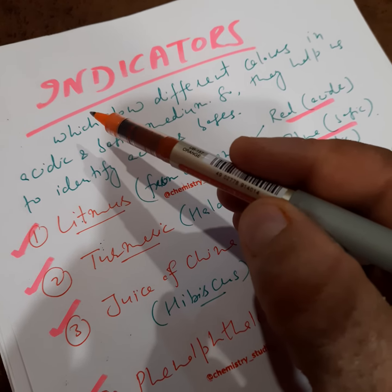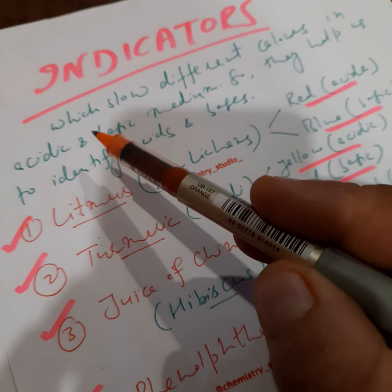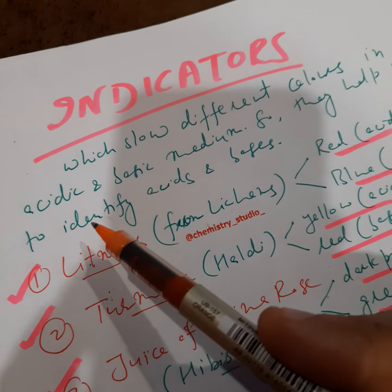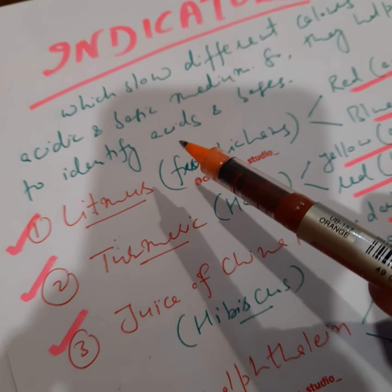In this video we shall learn about indicators. Indicators are substances which show different colors in acidic and basic mediums. They help us to identify acids and bases.